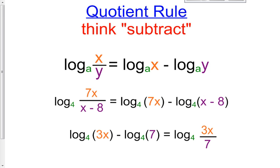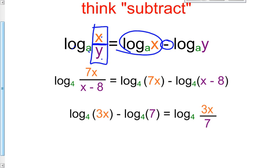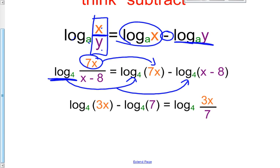Let's look at the quotient property. The quotient property says: log base A of (X divided by Y) — when it's a quotient, you subtract. It would be log base A of X minus log base A of Y. The division sign means you subtract. Putting that into practice: log base 4 of (7X divided by (X − 8)) becomes log base 4 of 7X minus log base 4 of (X − 8).